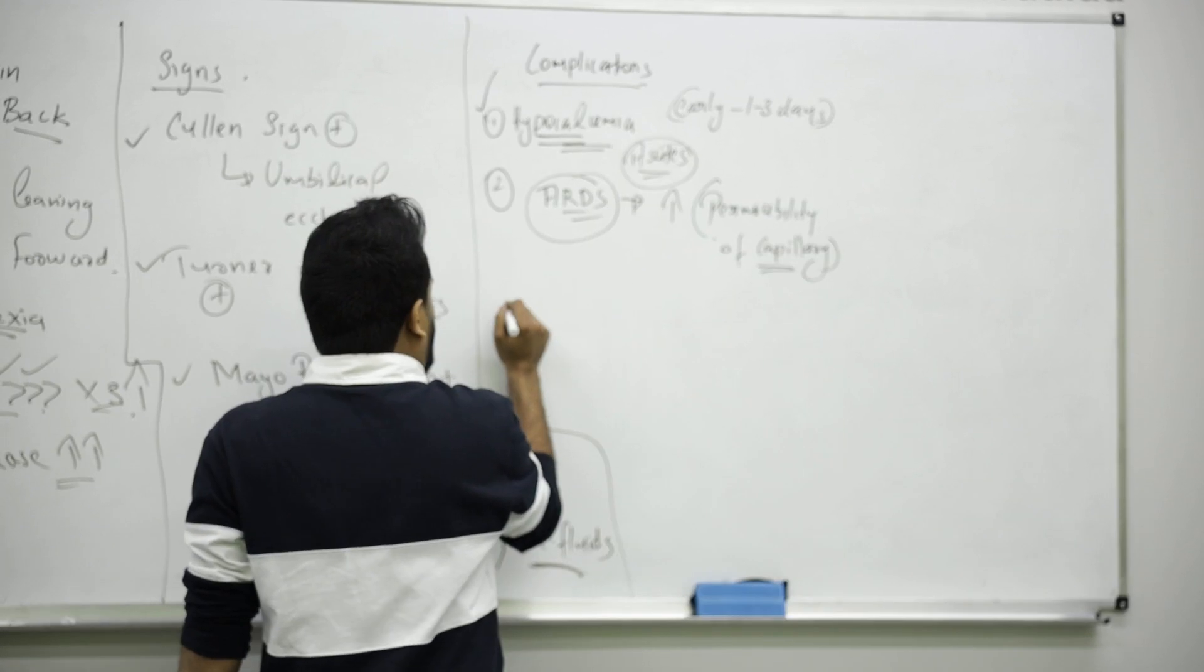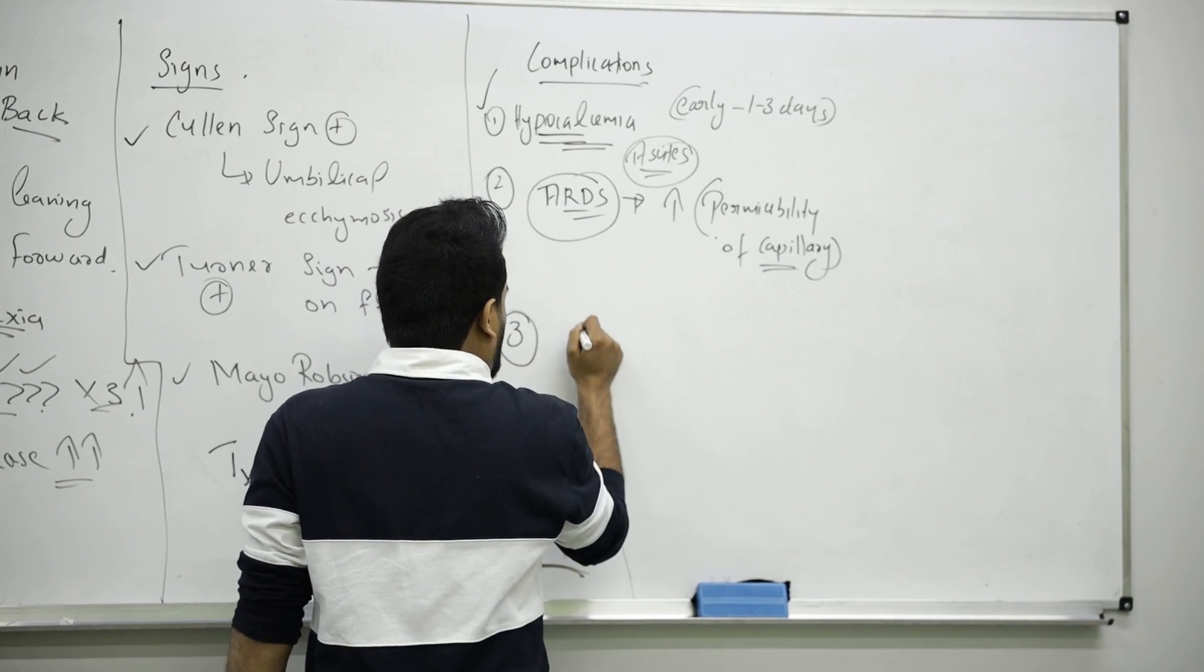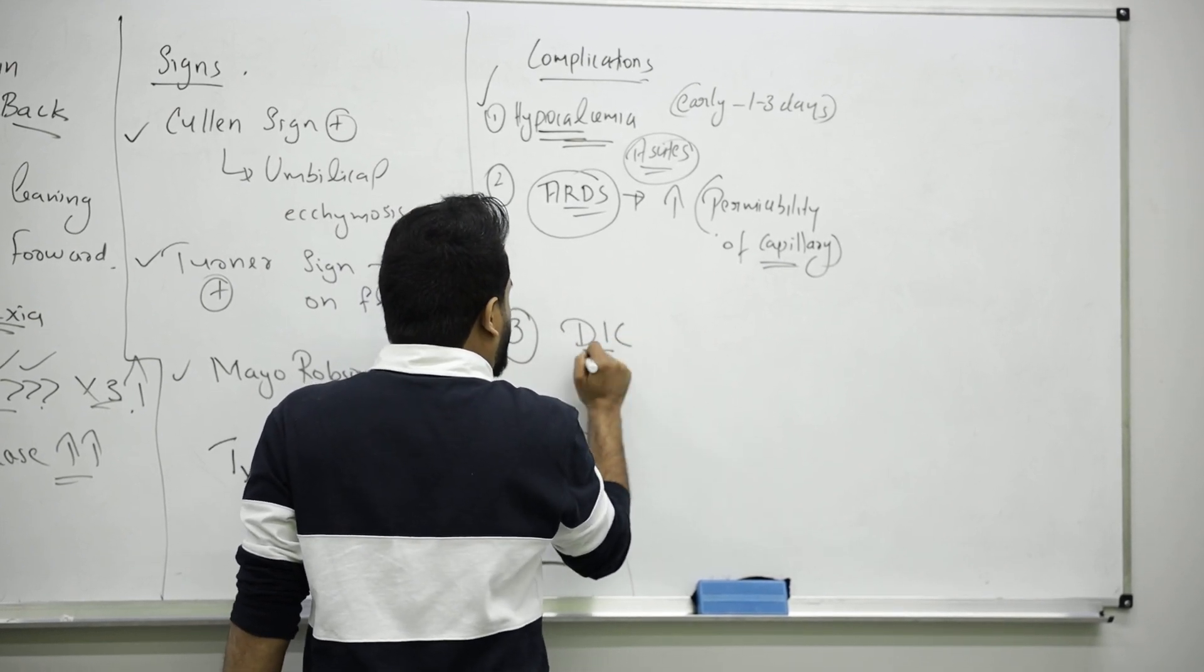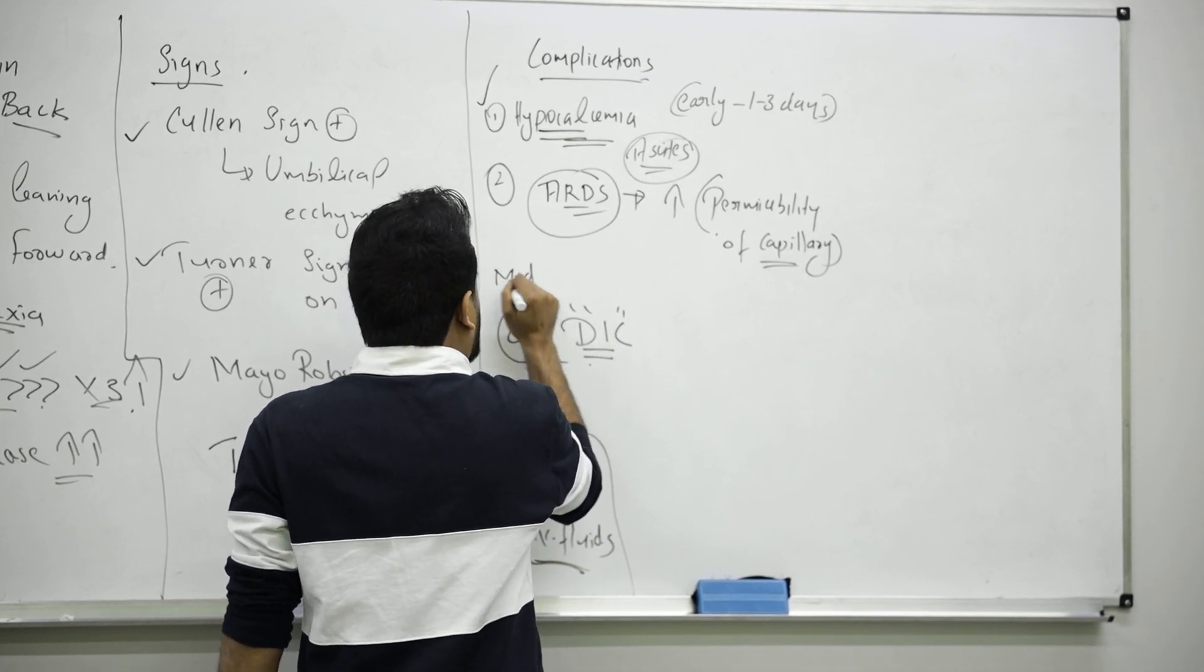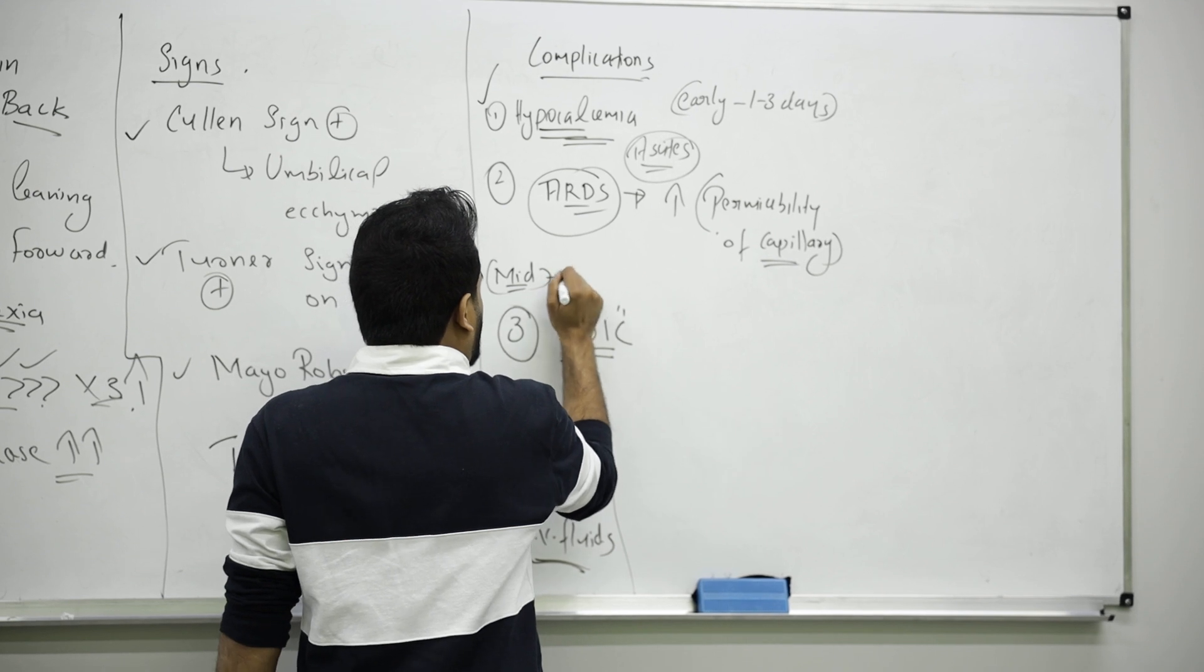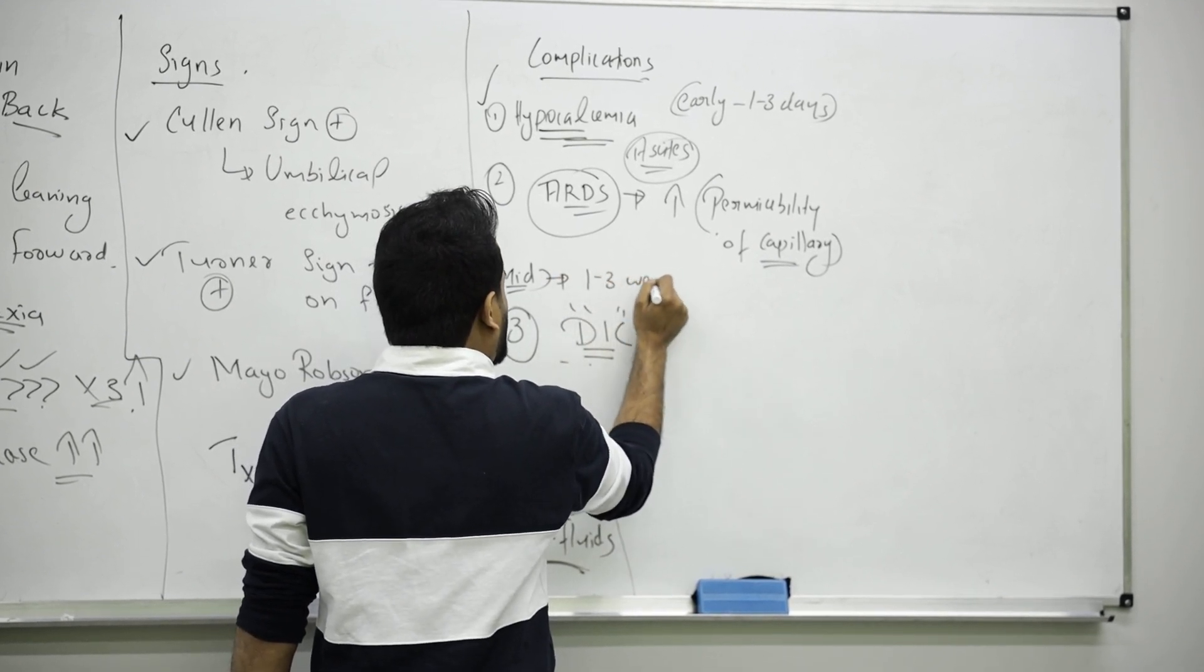Next complication that happens is called DIC, disseminated intravascular coagulation. It was early, like one to three weeks it will happen.